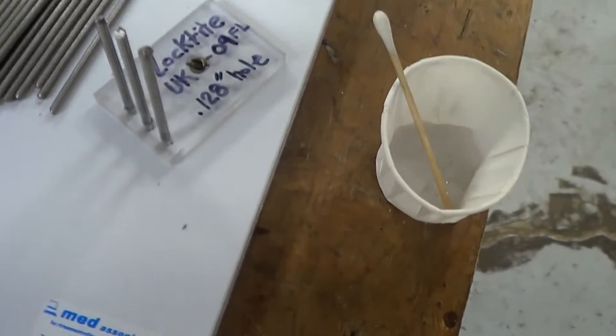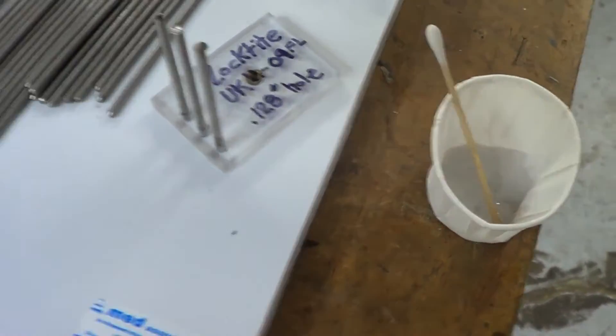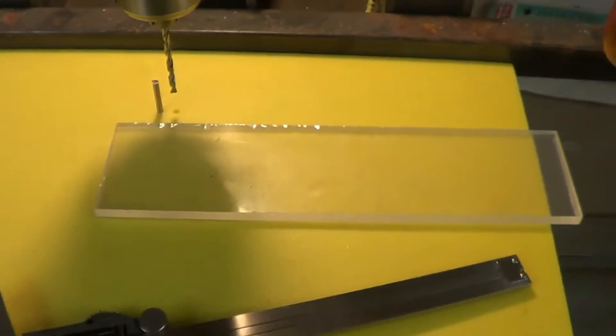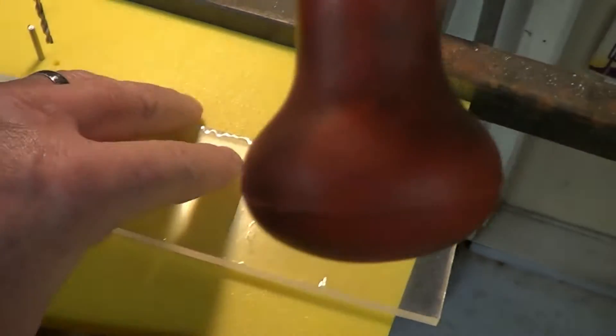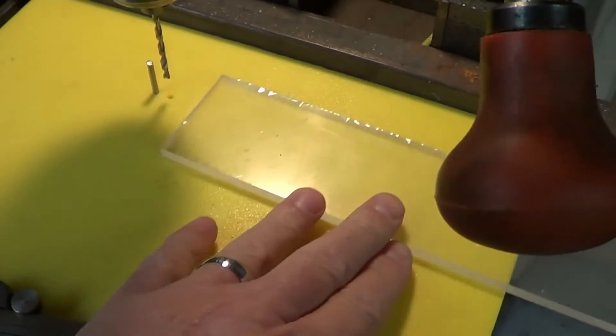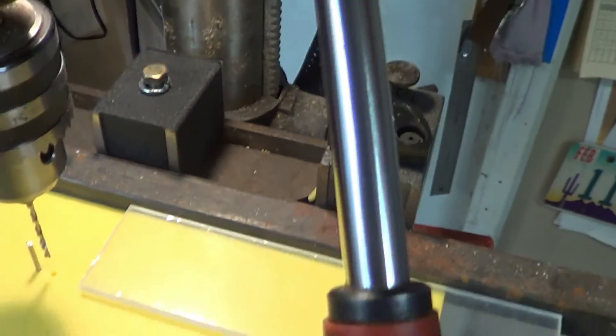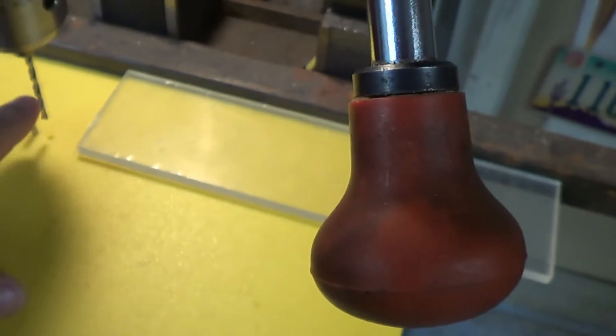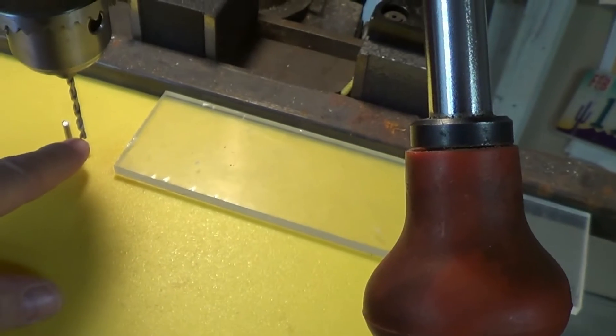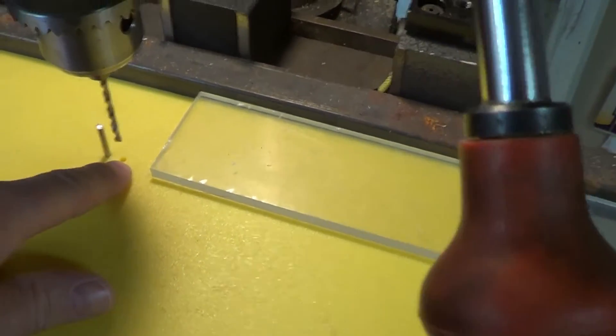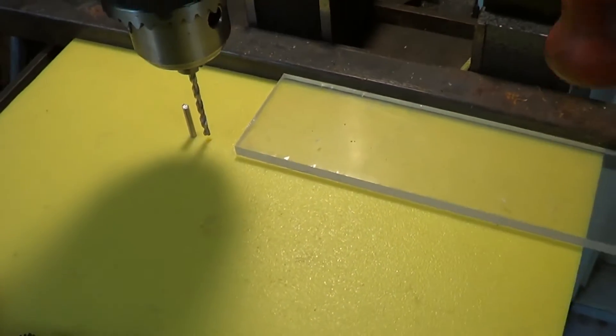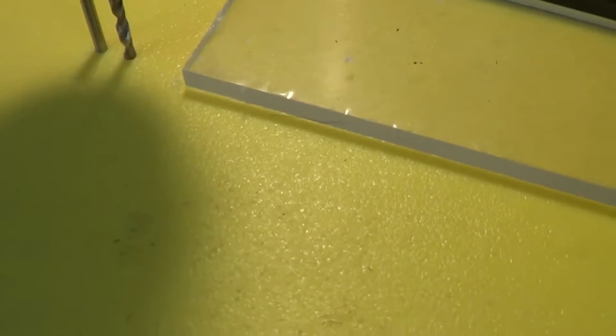What I'm going to do is I've got a drill jig set up here on my drill press, and this is a piece of the plastic I'm going to be using. I've got a fence set up here with some magnetic bases, and this is my 0.128 inch drill. You can see this is where the drill drills into that hole.